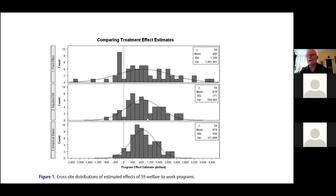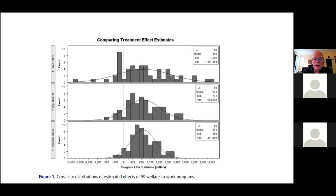Interestingly, the empirical Bayes point estimates as a collective underestimate the variation — they are less variable than what we think is really happening. The middle histogram is based on the maximum likelihood estimator of the variance — the unbiased estimator — and it's kind of between the two extremes. The shrinkage estimators give you a better picture of the collection than do the simple site-by-site estimates. But the unbiased estimator of the whole distribution comes from maximum likelihood. The question becomes: do we have a confidence interval on those maximum likelihood estimates? That's really what we're talking about today.